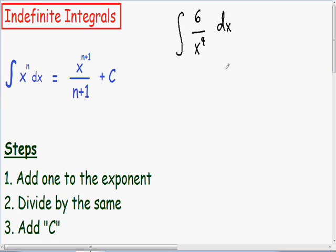So the first thing you want to do for this particular example is we want to get the x out of the denominator and we want to write it in the numerator. So if you remember from algebra, a positive exponent in the denominator is a negative exponent in the numerator. So instead of 6 over x to the fourth, I'm going to write 6 multiplied by x to the negative 4.